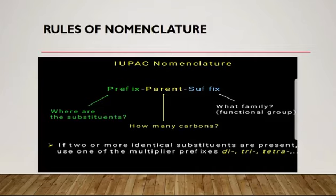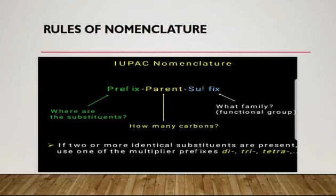If two or more identical substituents are present, use multiplier prefixes. If there are two methyl groups, you say 'dimethyl', but you must first indicate the positions where they occur. For example, if a methyl group is on carbon number two and another on carbon number four, you write '2,4-dimethyl', separating the numbers with a comma.